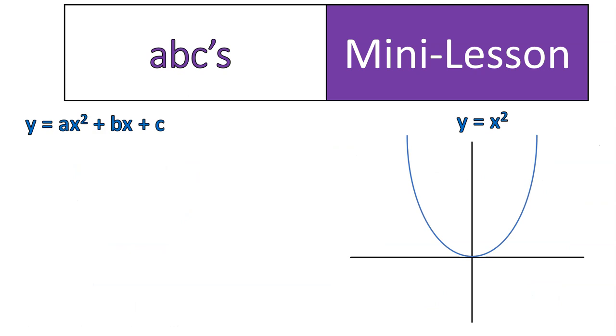So now we're going to talk about the ABCs. This is the standard form of a parabola equation. Y equals some number, a times x squared, plus some number times x, plus some constant. All right, a, b, and c. Notice they're there.